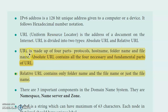URL specifies the host name, folder name, and file name of a resource on the internet. The relative URL is a part of the absolute URL. It is an incomplete URL and contains only the folder name and file name, or just the file name.